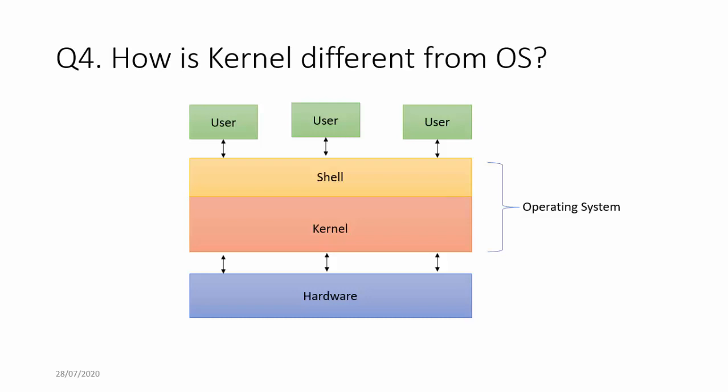Whatever the user's command is, it is passed to the kernel via the shell, and then the kernel passes it on to the hardware. So the kernel is that part of the OS which directly interacts with the hardware. That's why it is commonly called the heart of the OS, because the most crucial aspects of the operating system are performed by the kernel.